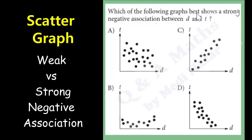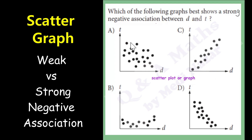Which of the following graphs best shows a strong negative association between D and T? The following graphs show us scatter plots wherein the data points are shown on the graph. These data points show the relationship of two variables.